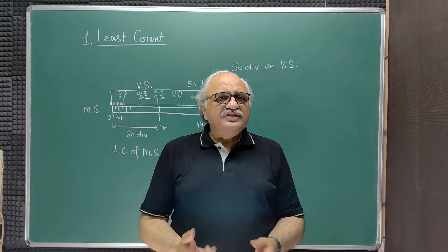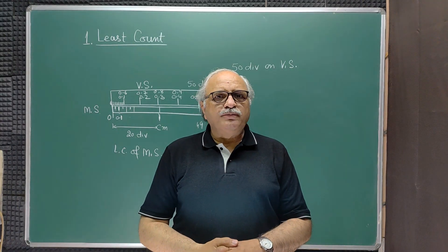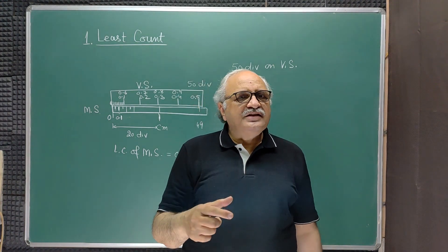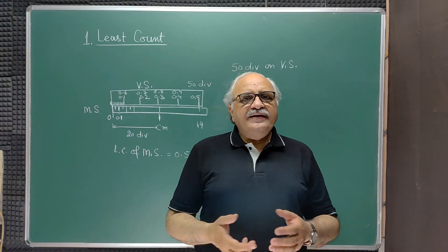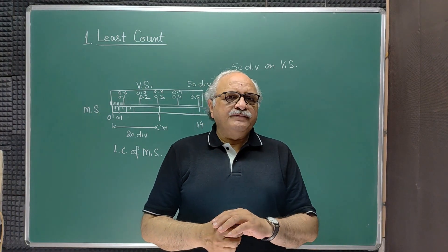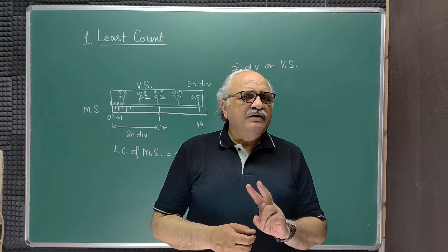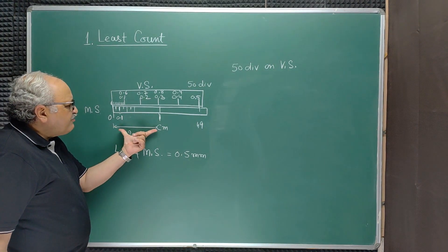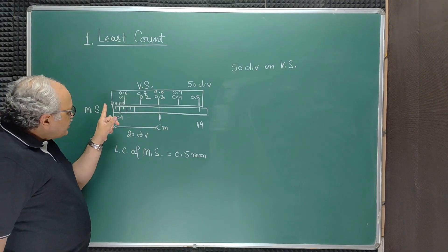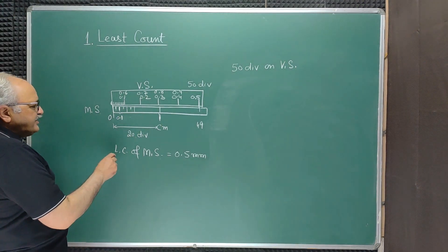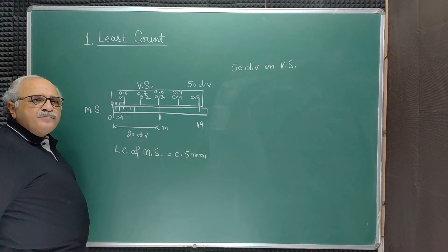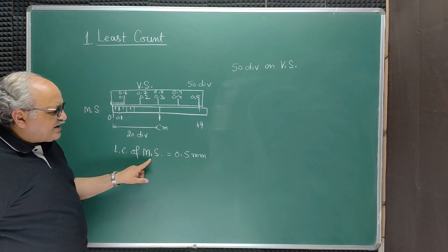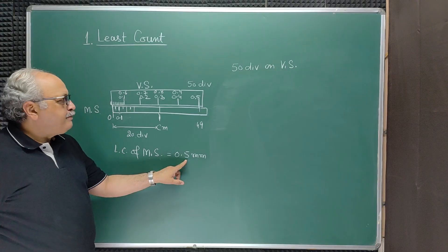The very first thing we have to do is to find out the least count of the instrument. If you look at the traveling microscope carefully, there are two scales — one is a horizontal scale and the other is a vertical scale. Both scales are identical and both have two parts: one is the main scale and the other is the vernier scale. On the main scale, a distance of one centimeter is marked by 20 equidistant marks, meaning there are 20 divisions in one centimeter.